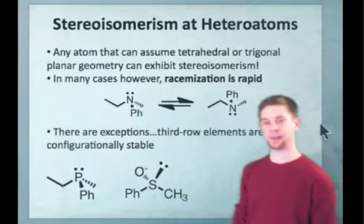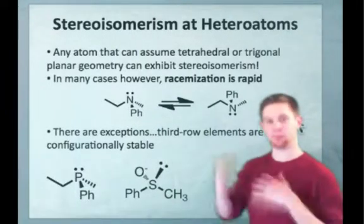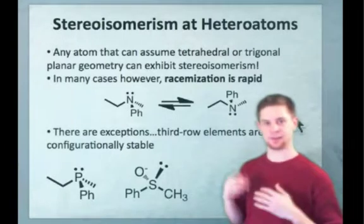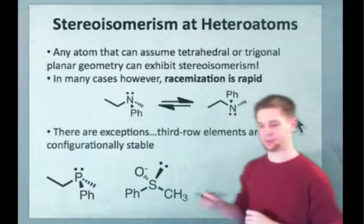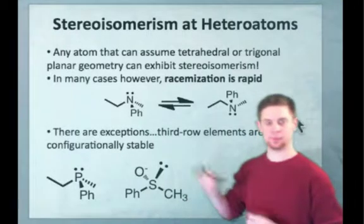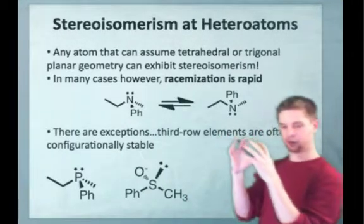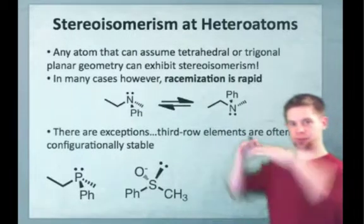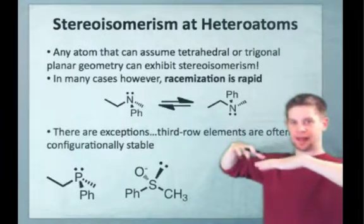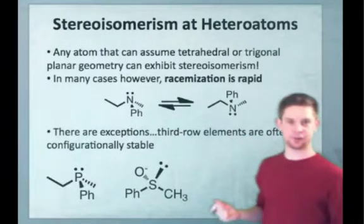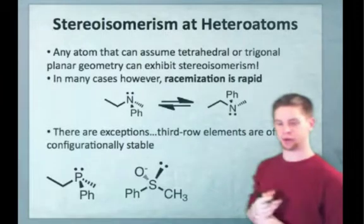The problem with isolating pure enantiomers of amines is that the umbrella flip process is so rapid that, for all intents and purposes, on average, the nitrogen is planar. Because half the time it spends in one umbrella form, the other half in the other umbrella form. So on average, it's essentially flat. This turns out to simplify a lot of compounds containing amines, because we don't have to worry about stereoisomerism.